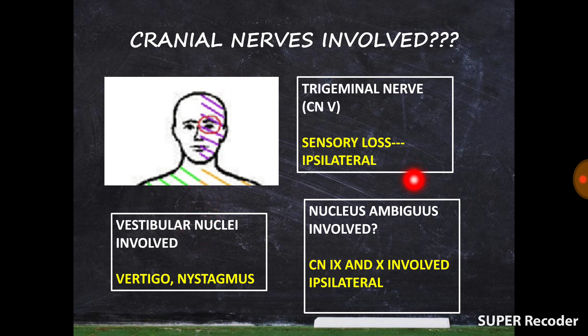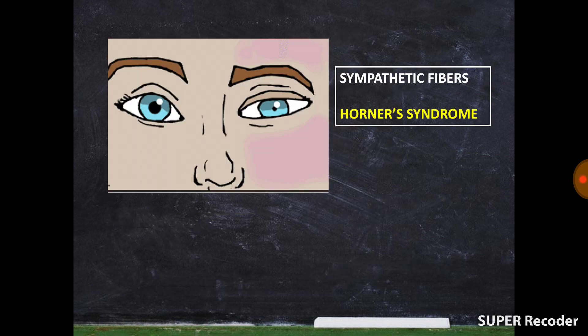The nucleus ambiguus is involved, and this is important because it supplies both cranial nerve 9 and cranial nerve 10. There will be ipsilateral loss of all functions supplied by CN 9 and CN 10: the person will have dysphagia and abnormal movements, and will not be able to manage food in the mouth properly. Additionally, the descending sympathetic fibers are also located laterally in the medulla, so if they are involved, you will get all the features of Horner's syndrome.